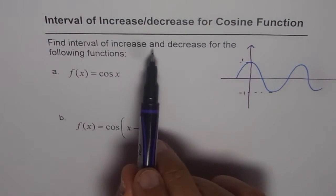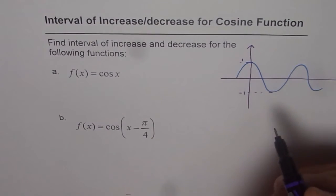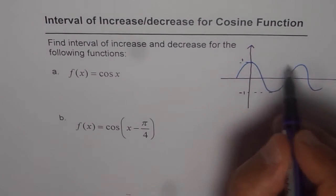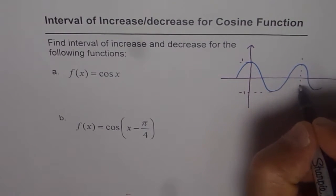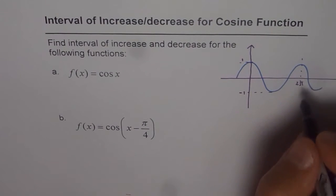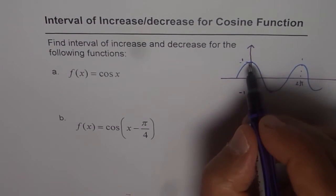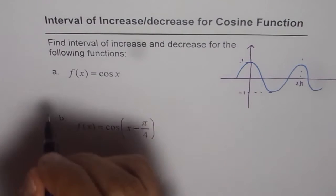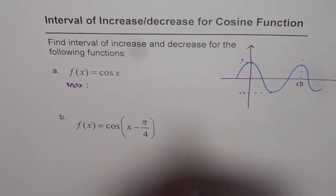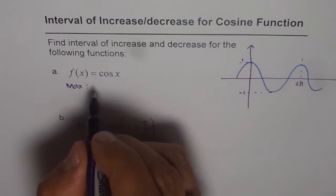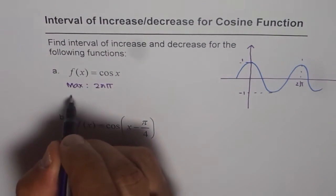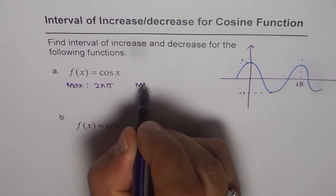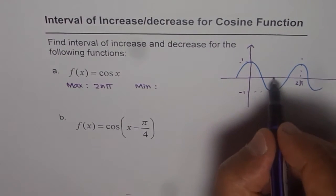When we say interval of increase and decrease, then it's a good idea to find where are the maximums. So if the time period for a cosine function is 2 pi, so it repeats after every 2 pi, so maximum for a cosine function is at 2n pi. So maximums are at 2n pi, and the minimum is at, this is at pi.